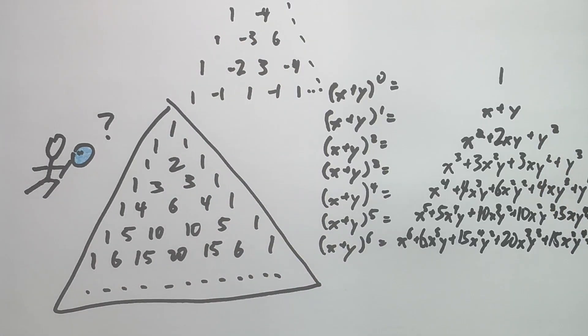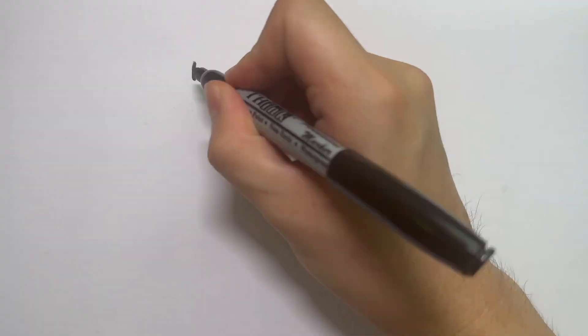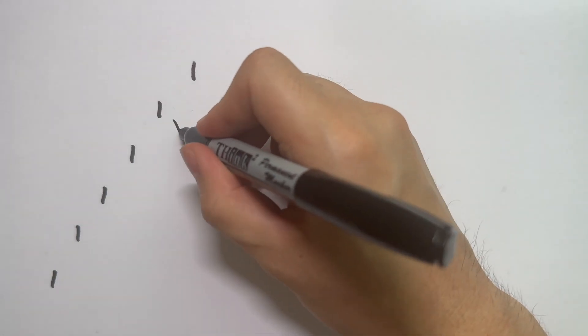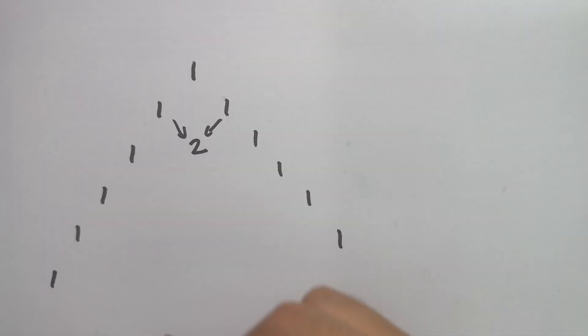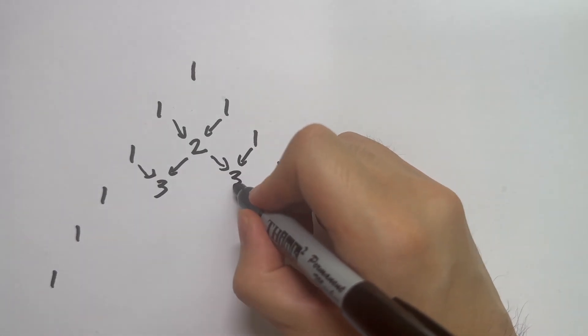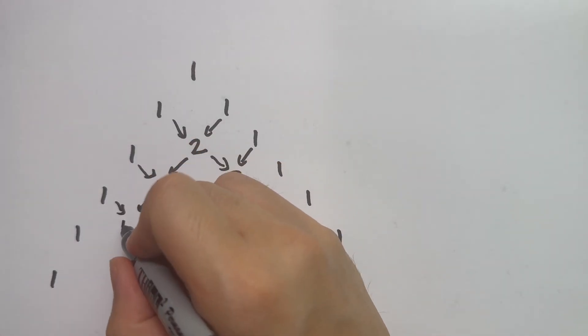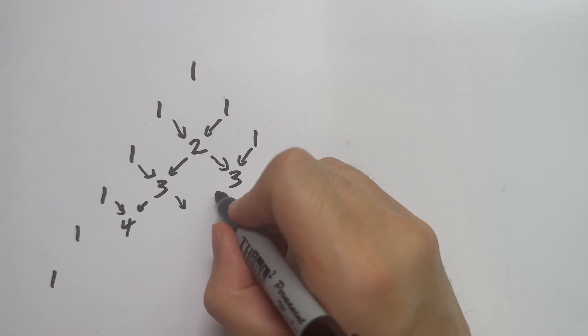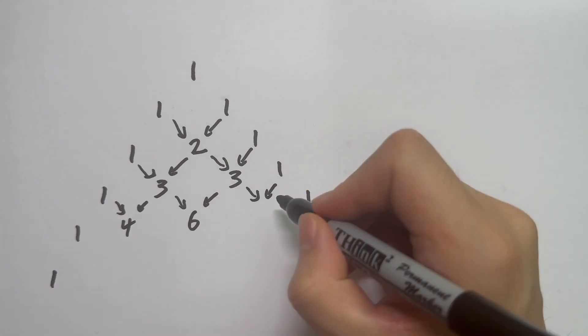If you're not familiar with Pascal's Triangle, you start with two borders of ones. Then to produce the middle numbers, you add up the two numbers above it. So 1 plus 1 is 2, 1 plus 2 is 3, 2 plus 1 is 3, 1 plus 3 is 4, 3 plus 3 is 6, and so on.